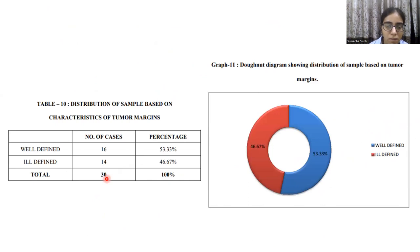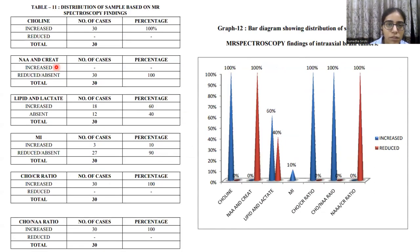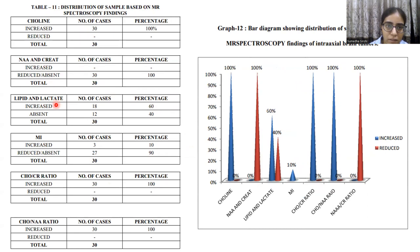Distribution based on tumor margin characteristics: 50% of the tumors were well-defined, while 46% were ill-defined. Spectroscopic findings showed: 30% of cases with increased choline; 100% with reduced NAA-to-creatinine ratio; 60% with increased lipid and lactate; 90% with reduced or absent myoinositol; 100% with increased choline-to-creatinine ratio; and 100% with increased choline-to-NAA ratio.